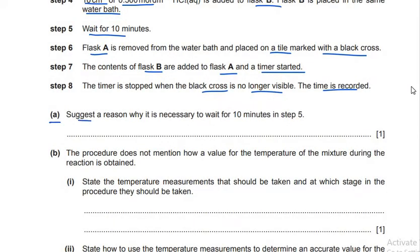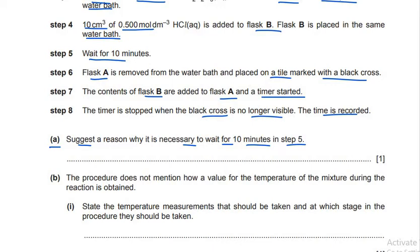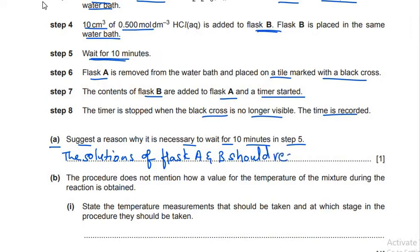The question asks: suggest a reason why it is necessary to wait 10 minutes in step 5. The only reason is that the solutions in flasks A and B should reach the same constant temperature set in the water bath. That's why we wait 10 minutes by keeping the flasks in the water bath.